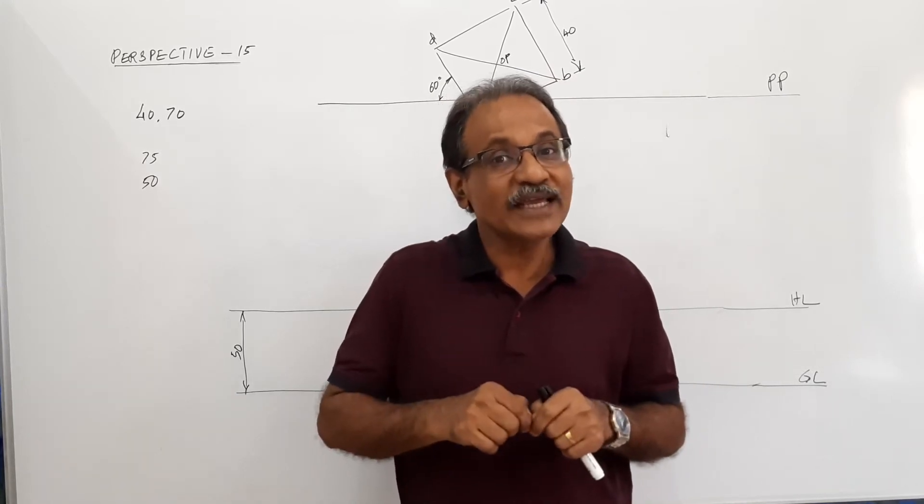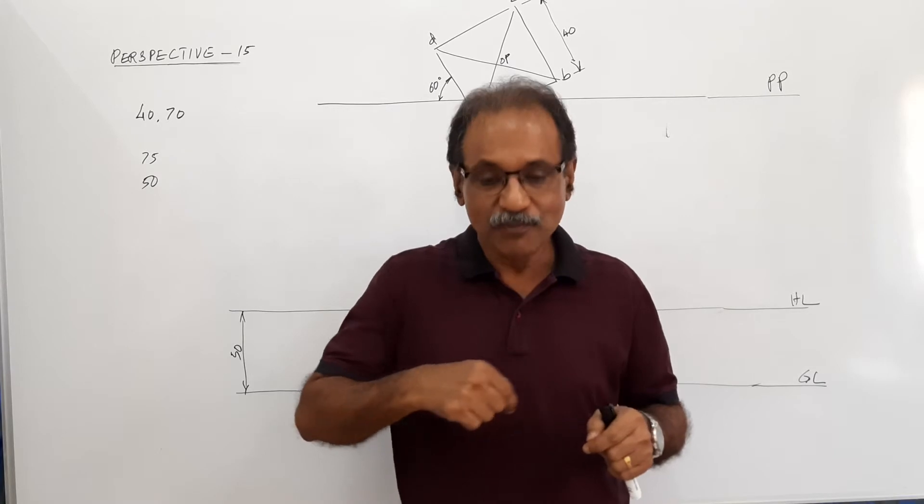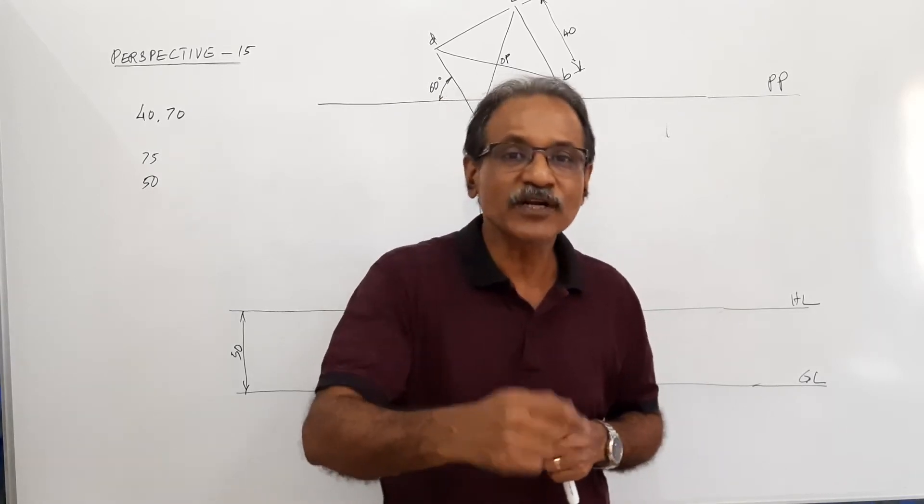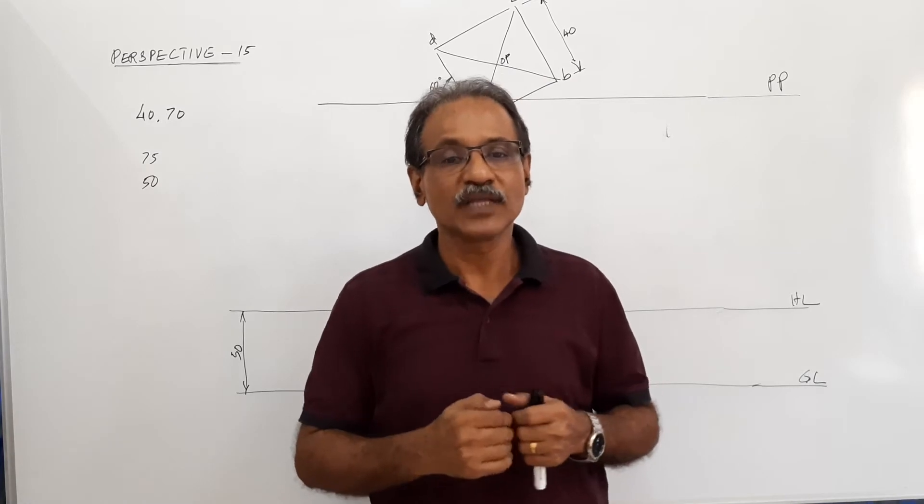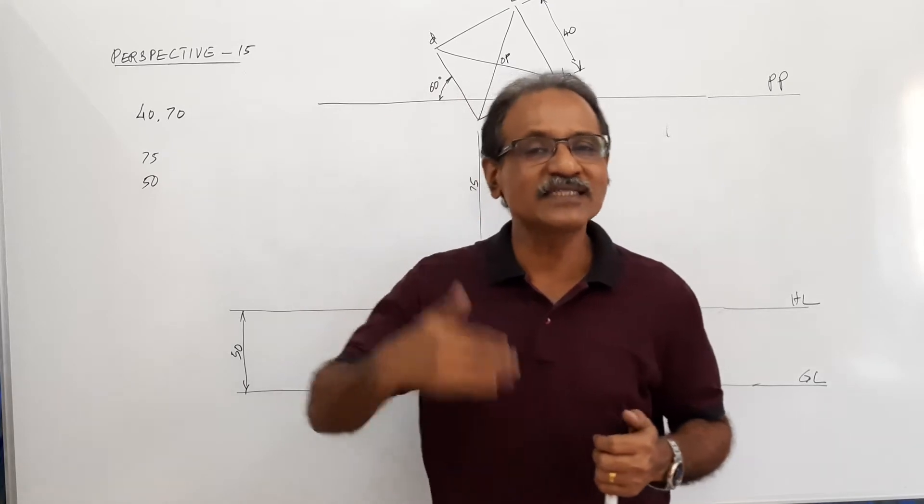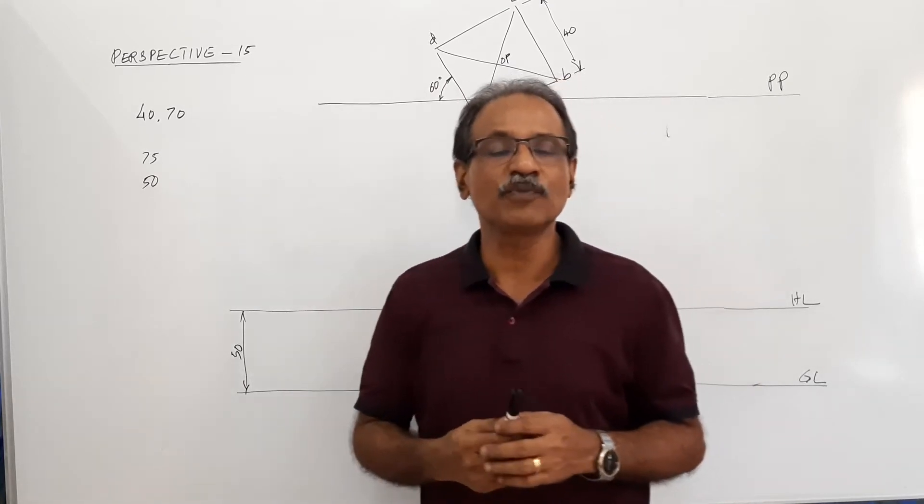With the corner A of base A, B, C, D in front of BP by 10 mm. The remaining part is behind picture plane. That means the picture plane crosses the object. And one side of the base is making 60 degrees to BP.